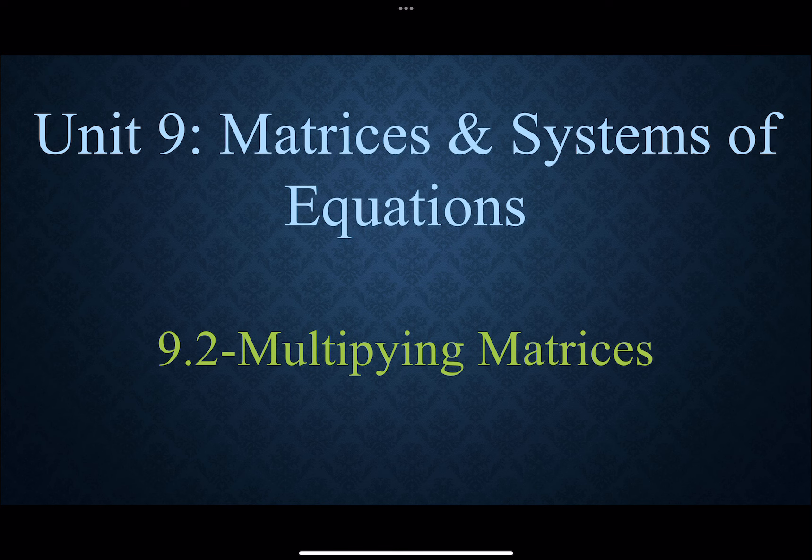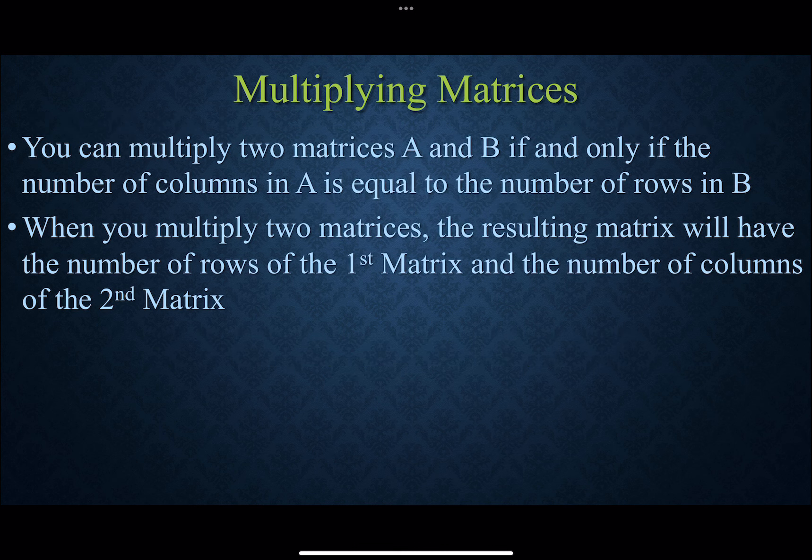Hi, welcome back. Today we're going to take a look at multiplying two matrices together — the rules governing how that works and how we can actually go about getting an answer. You can multiply two matrices A and B if and only if the number of columns in A is equal to the number of rows in B.